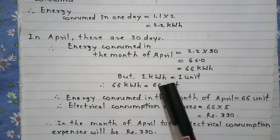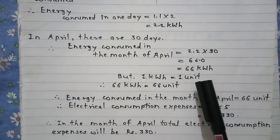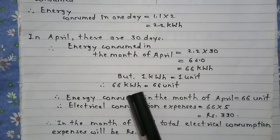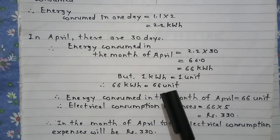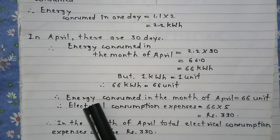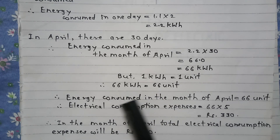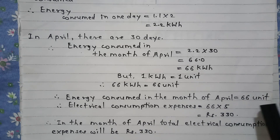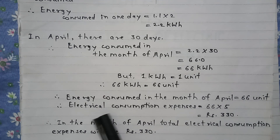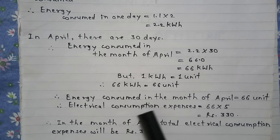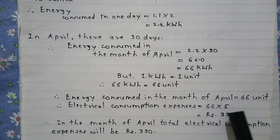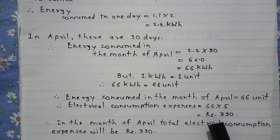We know 1 Kilowatt hour is equal to 1 unit. Therefore, 66 Kilowatt hour is equal to 66 units. Energy consumed in the month of April is equal to 66 units. Therefore, electrical consumption expenses will be 66 into 5, that is equal to Rs. 330.